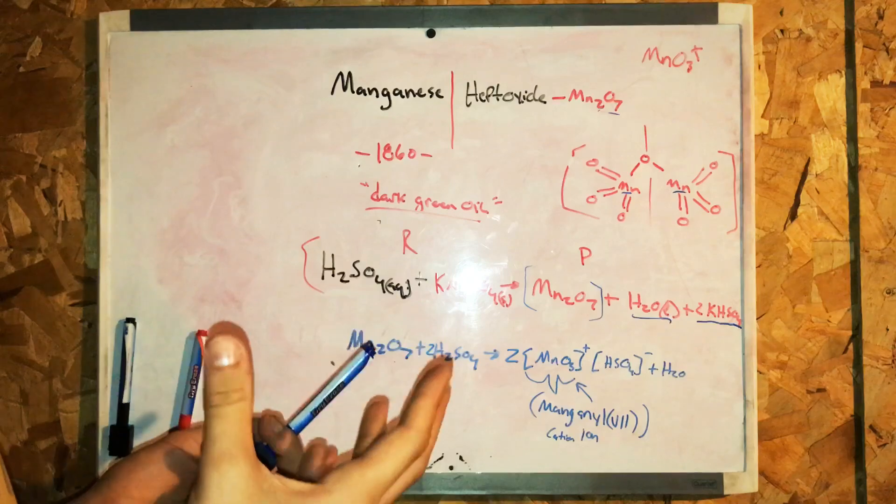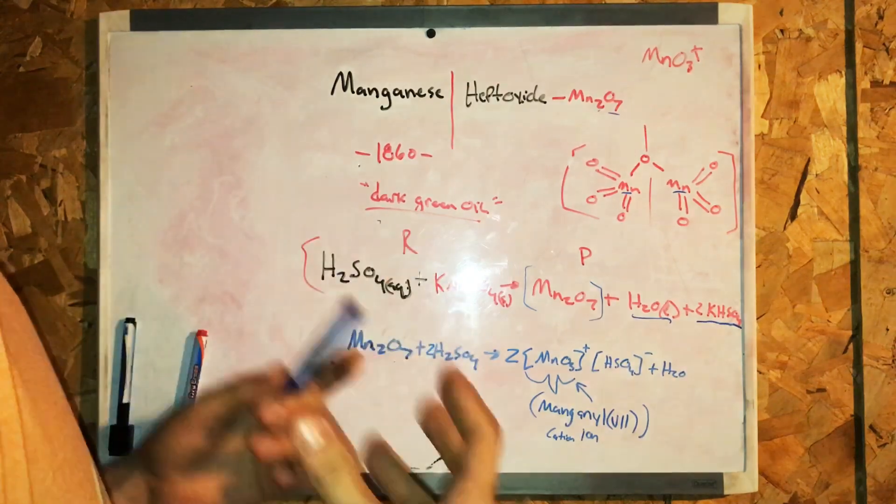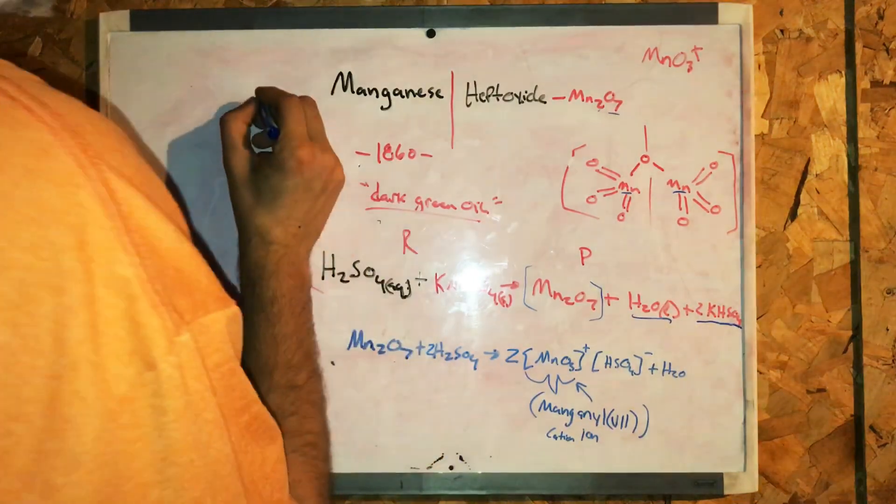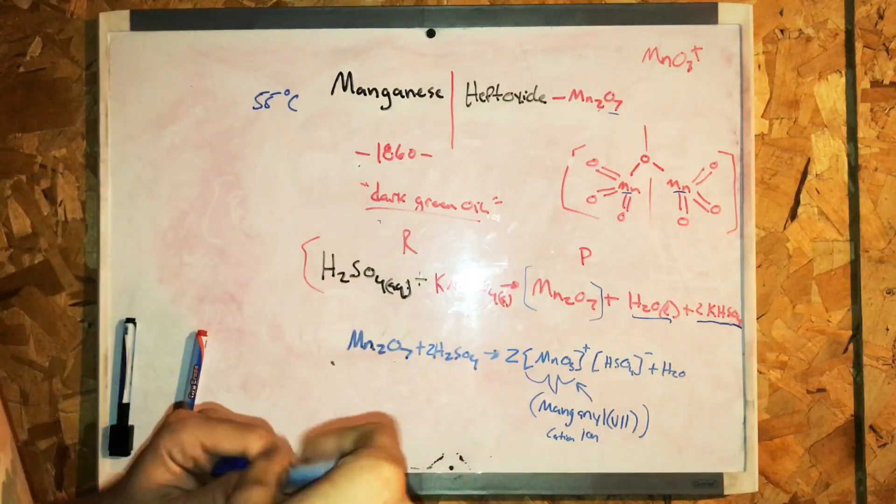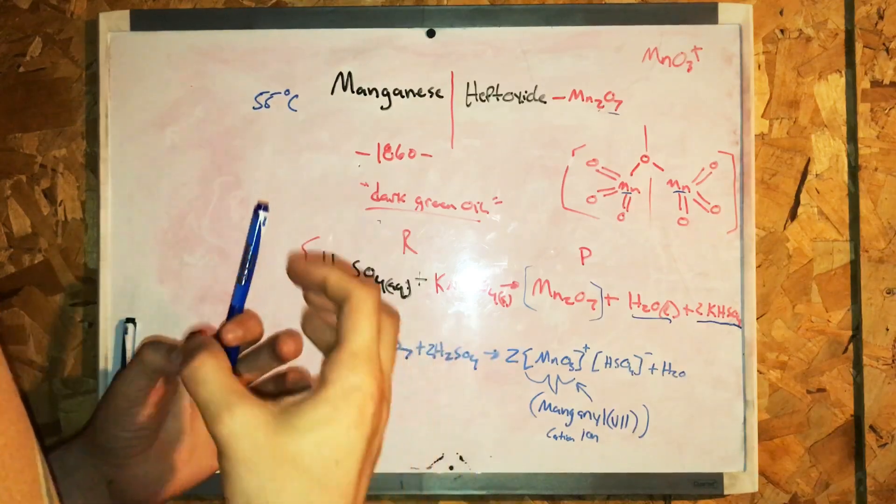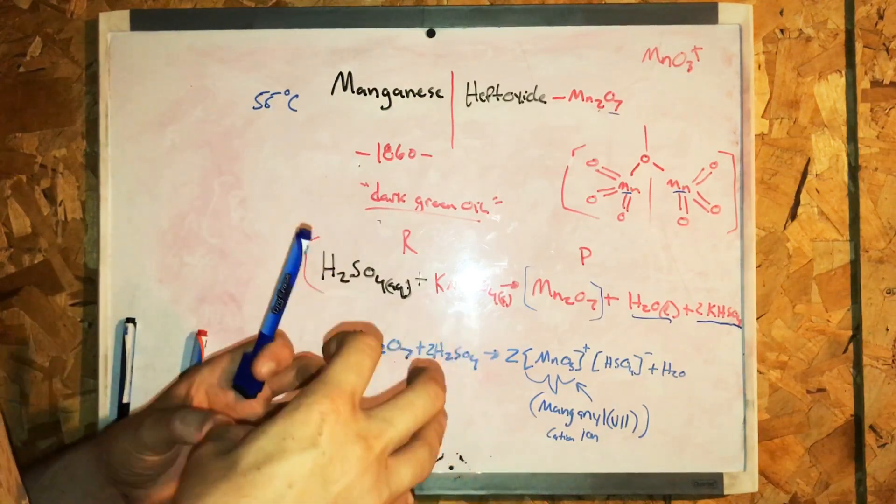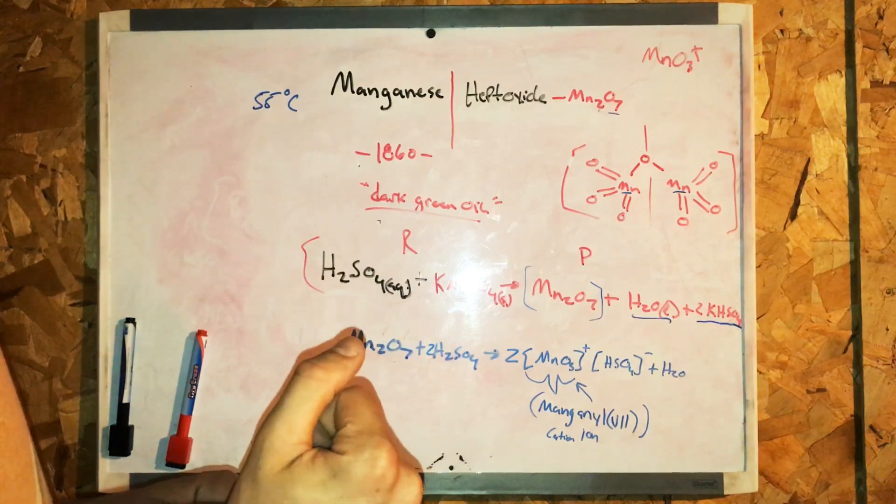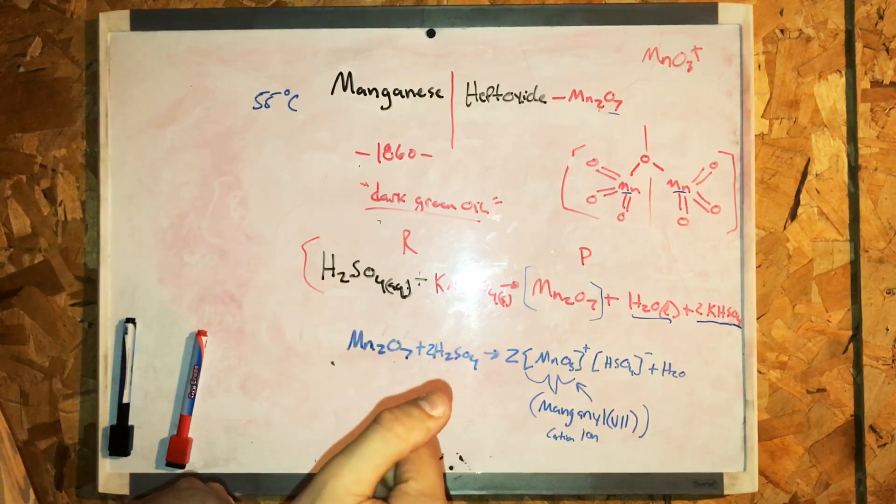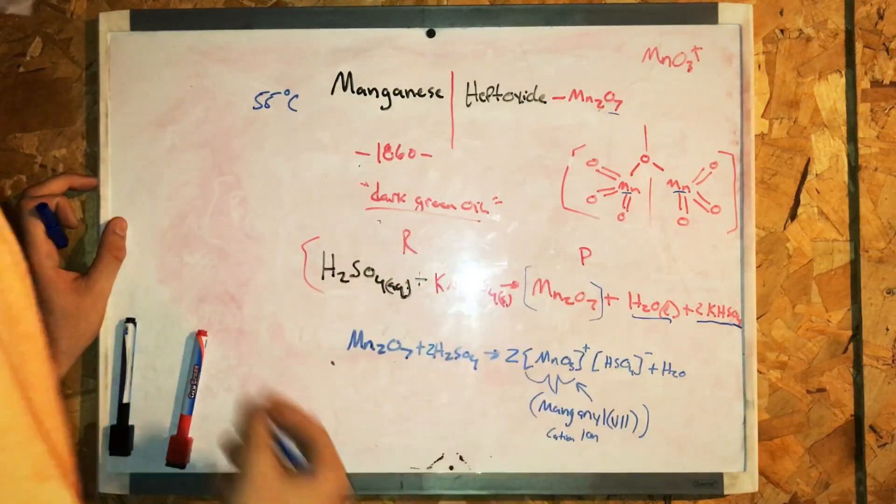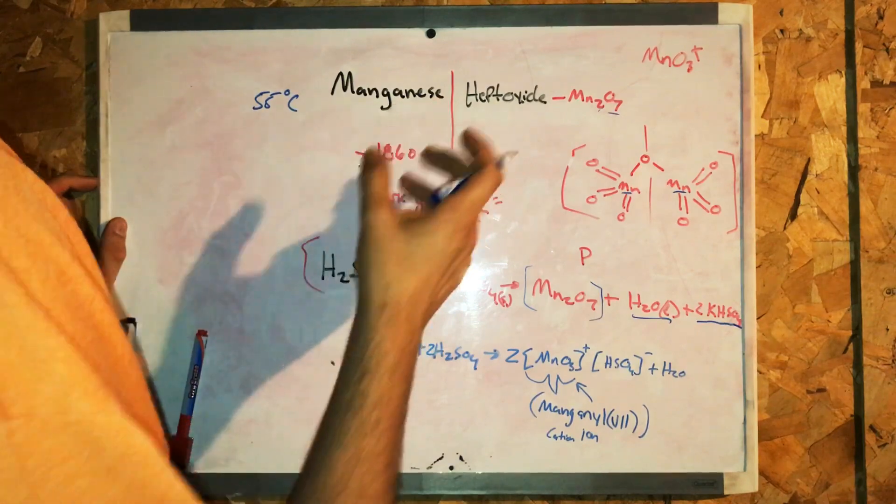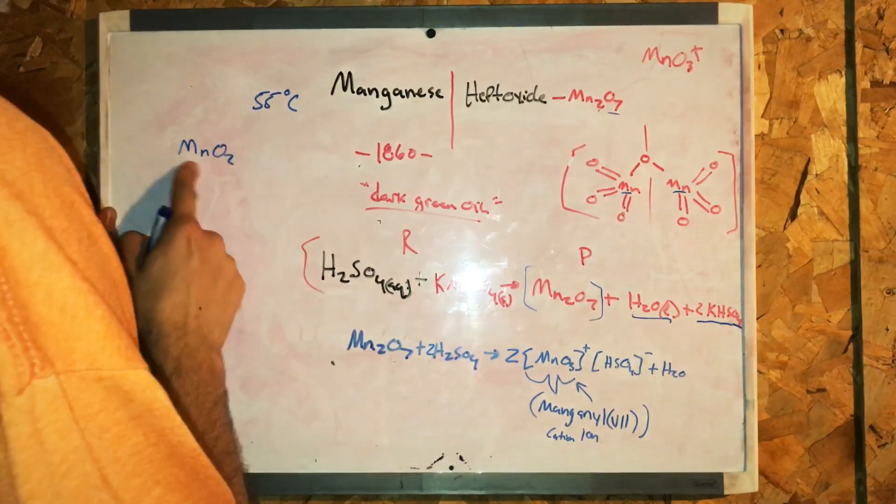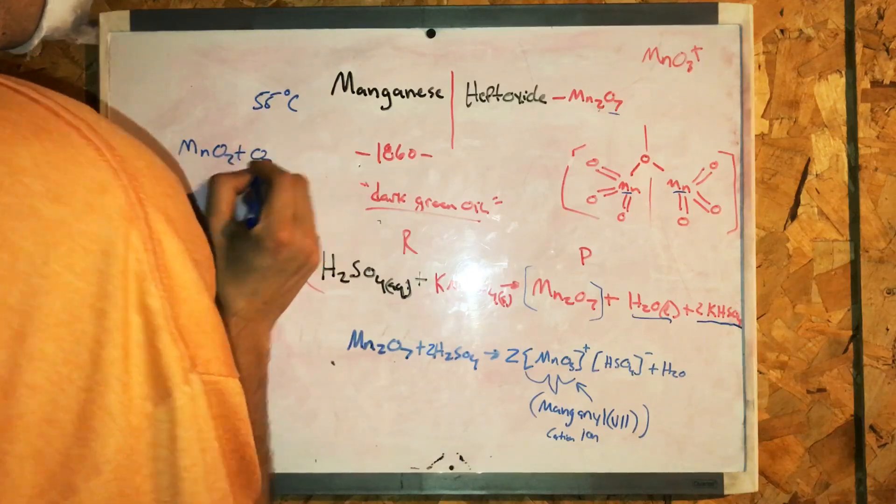So manganese heptoxide decomposes near room temperature. It's explosive at the temperature of above 55 degrees centigrade. The explosion can be initiated by striking the sample or by exposure to an organic compound. The products after the manganese heptoxide has reacted and exploded is most likely manganese dioxide plus oxygen gas.